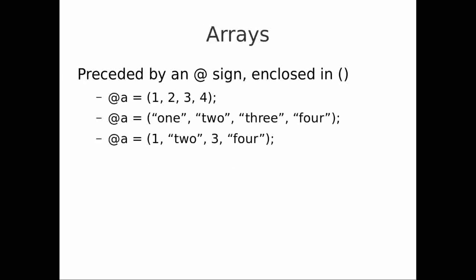What about arrays? Arrays are preceded by an at sign. The at is supposed to remind you of the 'a' in array. And arrays are enclosed by normal brackets. So in my first example, I have an array of four ints: 1, 2, 3, 4. In the second case, I have an array of four strings. And then in the third case, I have a mixed array — some ints and some strings. Remember, Perl is loosely typed, so it doesn't care if you mix together ints and strings. They're all basically handled the same way.